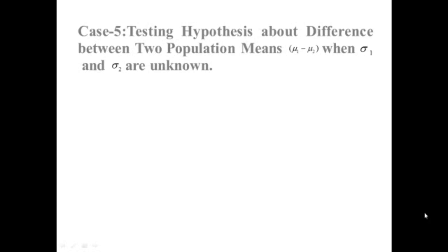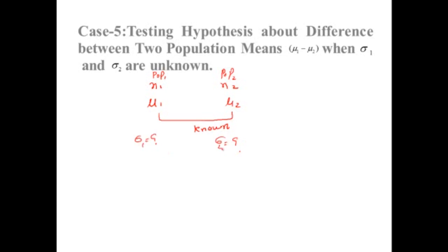Case 5: Testing hypothesis about the difference between two population means, mu1 minus mu2, when sigma1 and sigma2 are unknown. When independent random samples of sizes n1 and n2 are drawn from normal populations with known means mu1 and mu2, but the standard deviations are unknown — sigma1 is unknown, sigma2 is unknown — in this case we will use sample standard deviations S1 and S2 in place of sigma1 and sigma2.